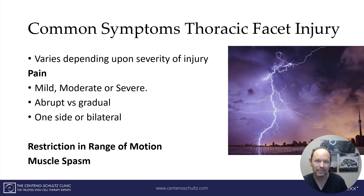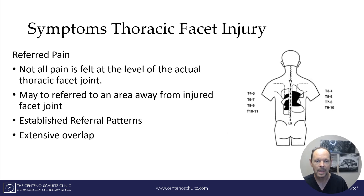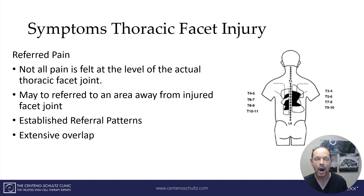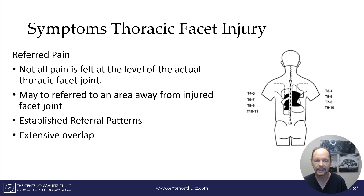Muscle spasm is that balling up of the muscles that really restricts your ability to do anything. There's also a thing called referred pain — pain that is perceived in an area different than where the actual tissue damage occurs. The most common example is a patient having a heart attack who may have lancinating pain down the arm or in the jaw. This is a classic example of referred pain. When it comes to thoracic facet injuries, the pain may not exactly be over the thoracic facet joint — it may actually be referred to an area away from the joint.